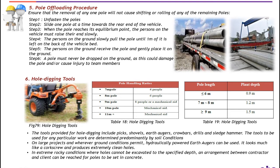Pole digging tools — a table shows different types of poles as per the length starting from 7 m up to 11 m plus, and how to handle the poles either with a number of persons or with mechanical means. Table 19 shows the hole digging depth as per the length of pole. For example: a pole less than 6 m has to be planted at a depth of 0.9 m; a pole 7–8 m has to be planted underground 1.2 m; and a pole length more than 9 m has to be planted underground 1.5 m.